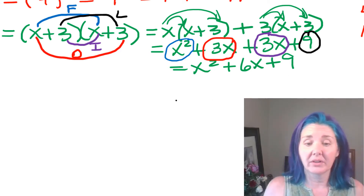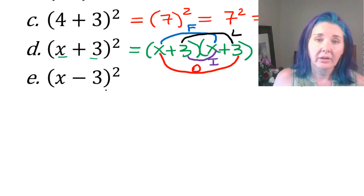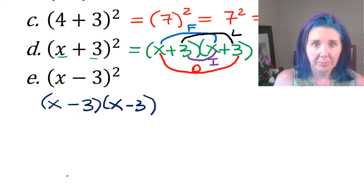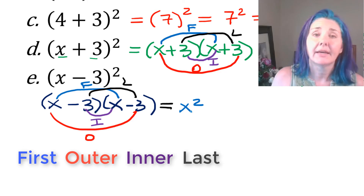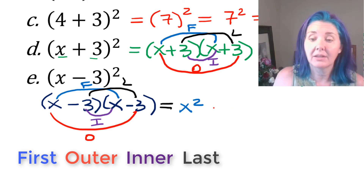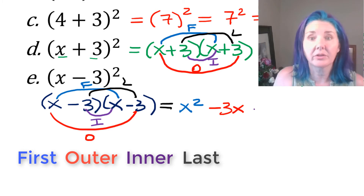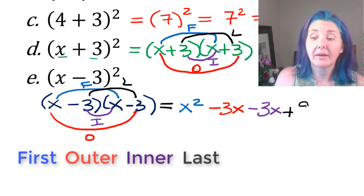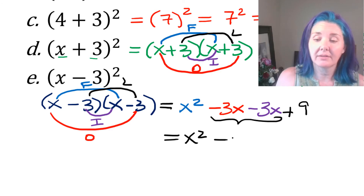On part E, we're going to use FOIL. When you see x minus three squared, you try to work inside the parentheses first, but you can't combine like terms since three doesn't have an x. So we write it as a product: x minus three times x minus three. First times first is x squared. Outer times outer is x times negative three, so negative three x. Inner times inner is negative three times x, also negative three x. Last times last is negative three times negative three — negative times negative is positive nine. Combining like terms, we get x squared minus six x plus nine.